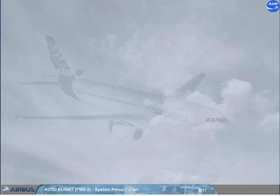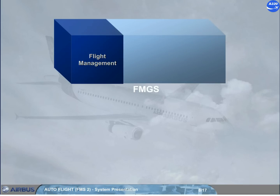The FMGS is divided into three main parts: flight management, flight guidance, and flight augmentation.